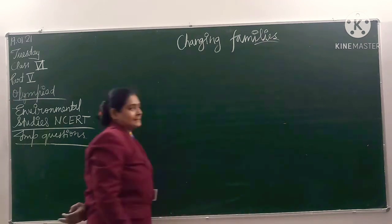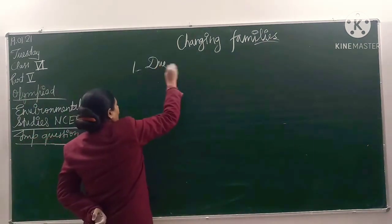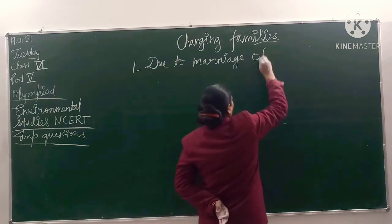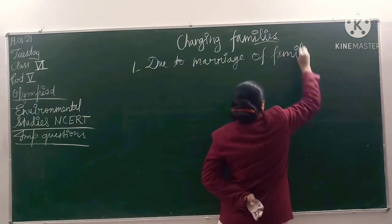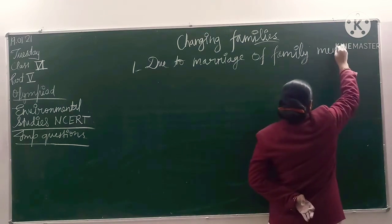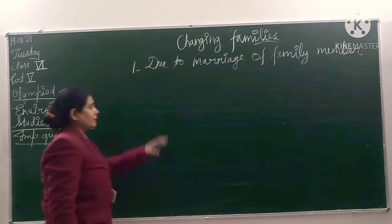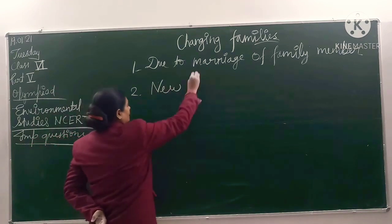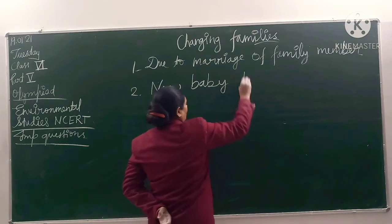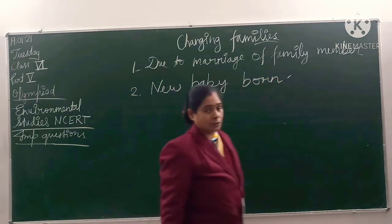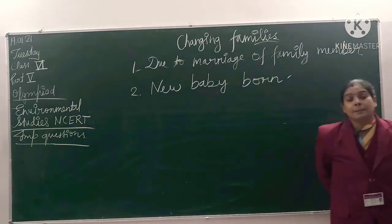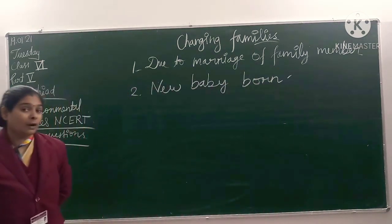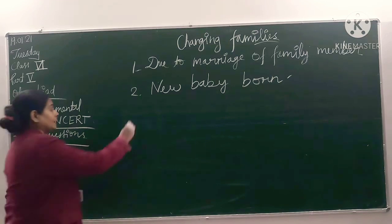Let's see how families change. First cause: due to marriage of a family member — if a family member gets married, your family changes. This is seen in Nazli's family. Next is a new baby born — when a new baby is born, the family also changes. This is seen in Nimmi's family. Also, when any family member is transferred from one place to another, the family changes — as seen in Sering's family.